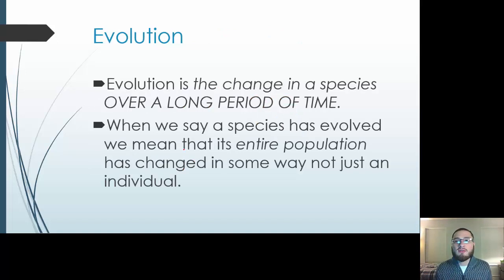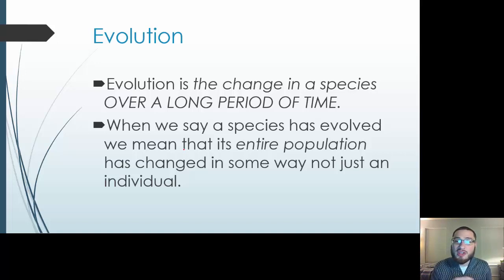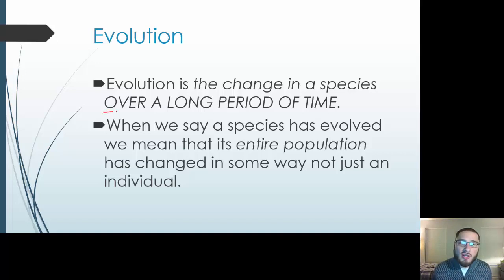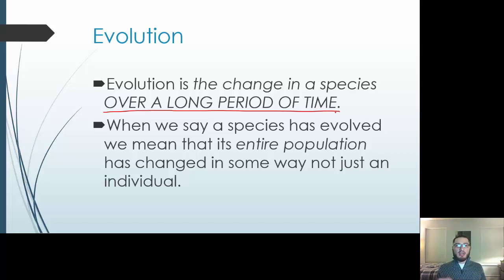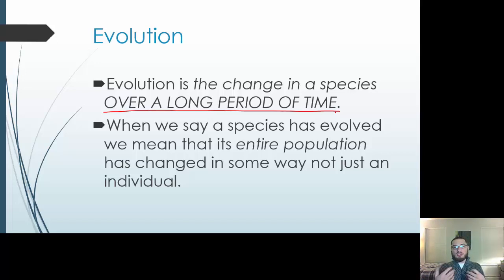Evolution is important to understand because as we move forward, we talk about different species, different animals, different organisms in the environment — that's part of environmental science. We want to understand how did we get here. The way we got here is through evolution — a change in a species over a long period of time. This is over millions of years. Evolution doesn't just happen overnight. It wasn't like a chimpanzee mother and father created a Homo sapien. It's over millions of years that we see changes.